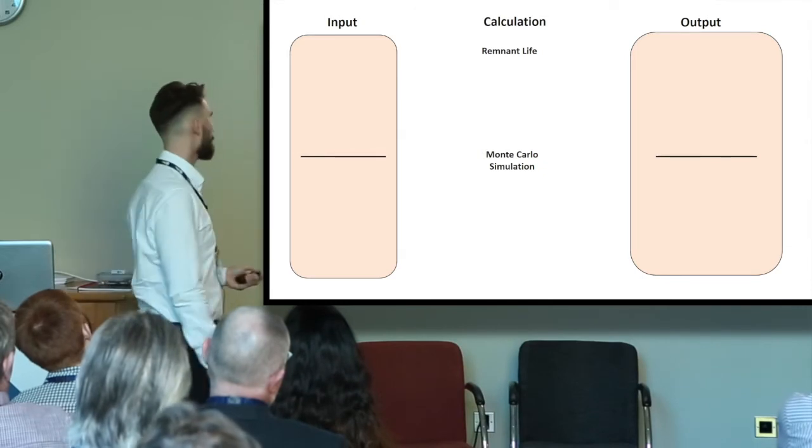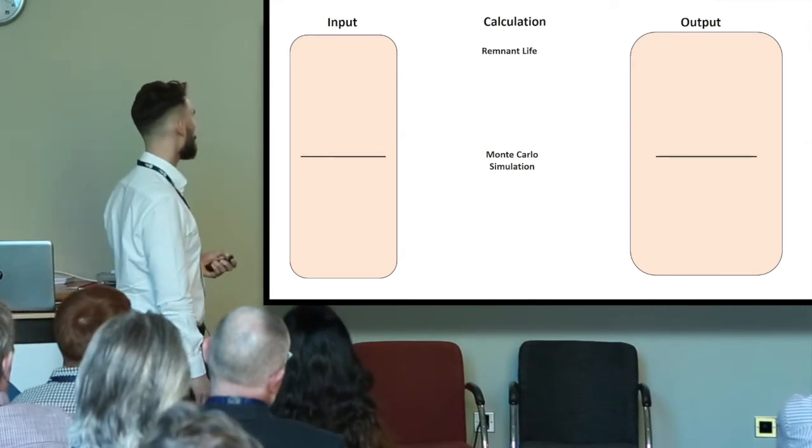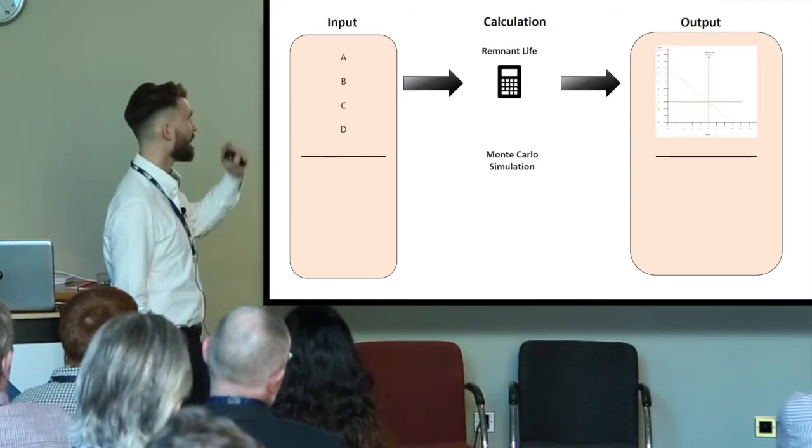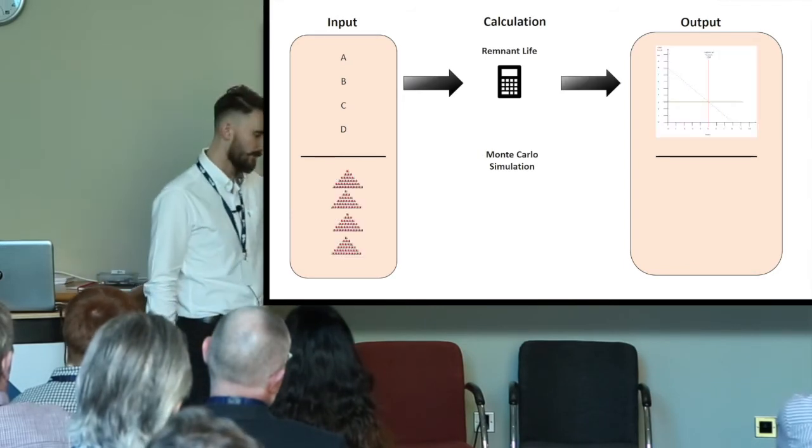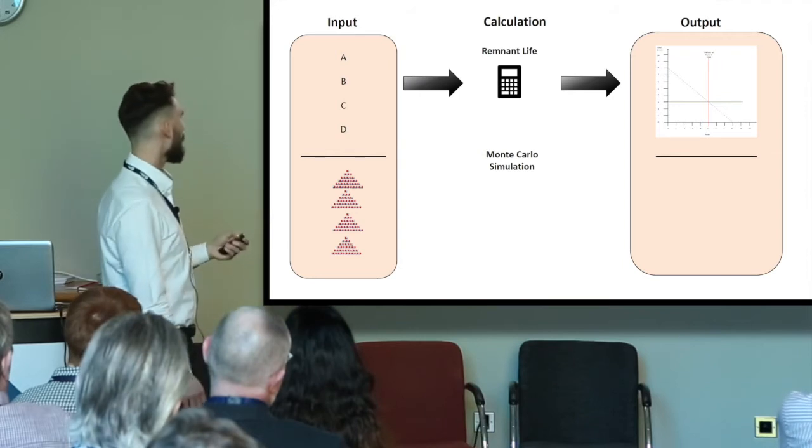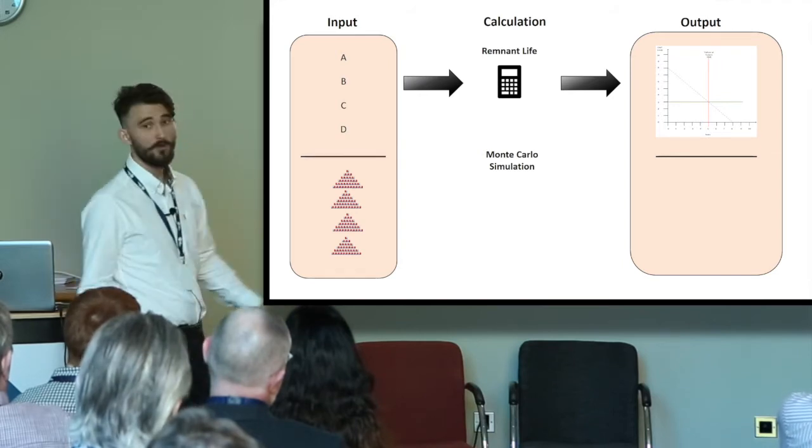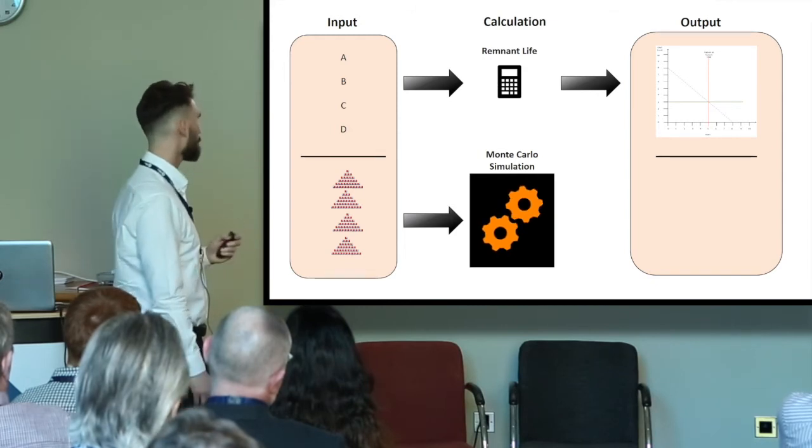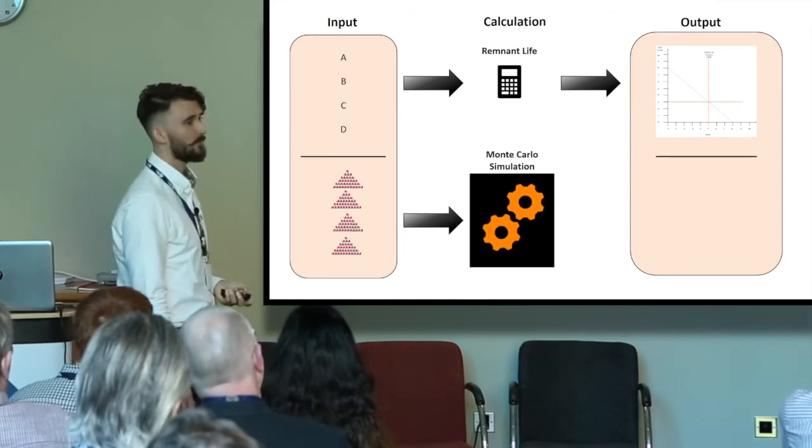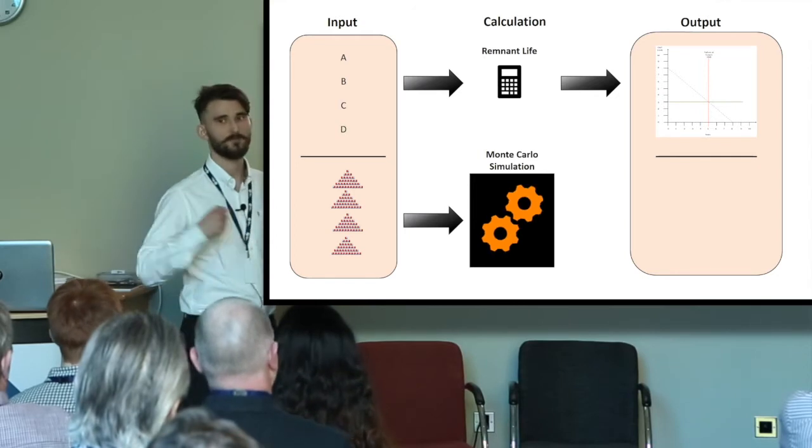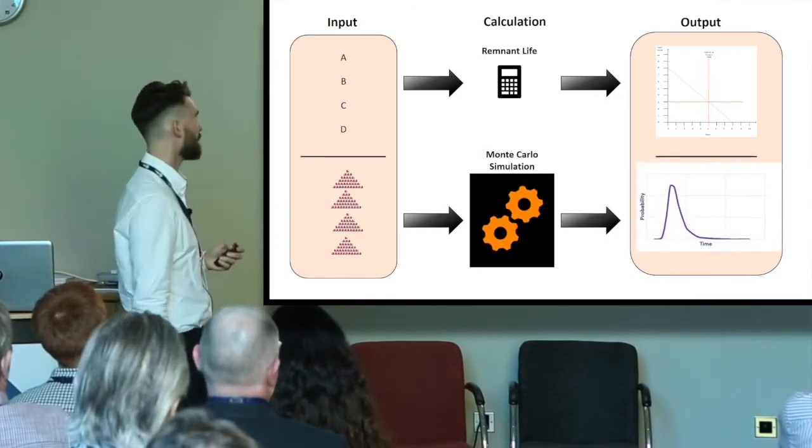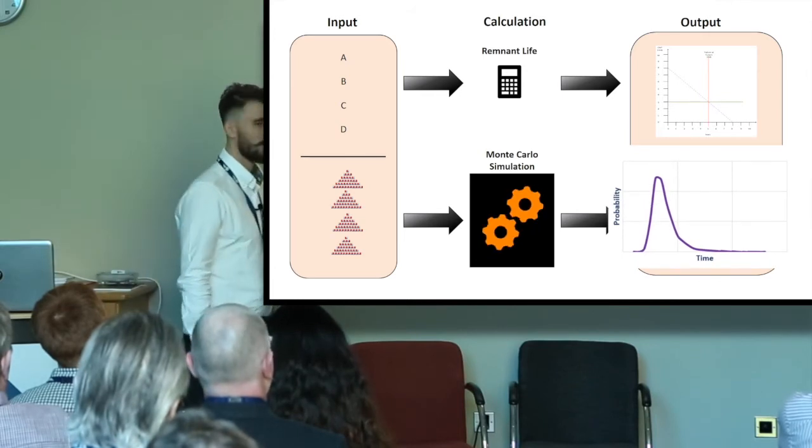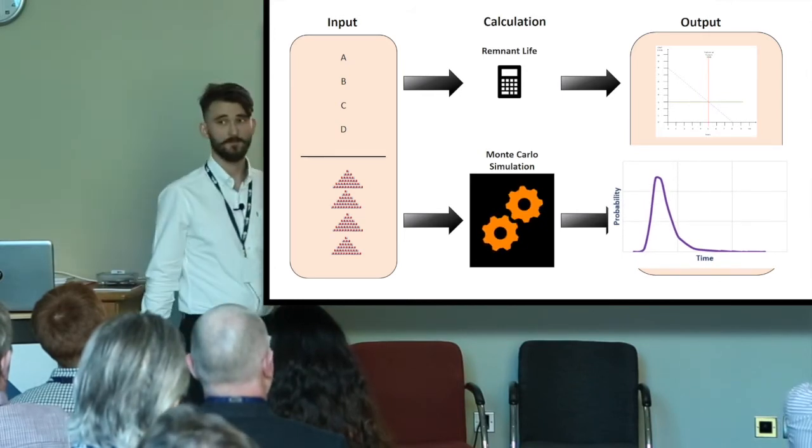Just for comparison, our inputs for remnant life, those discrete values, we put them in the calculator, we get a definite discrete value out of five years. Monte Carlo, we're going to take all our uncertainties, put them in as probability distributions. The tool will basically churn out thousands of calculations to see how all of these interact with each other, and it gives you this really useful graph of probability against time to failure.